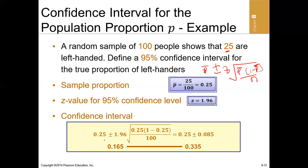Substituting into the formula: 0.25 plus or minus 1.96 times the square root of 0.25(1 minus 0.25) all over 100. This yields a margin of error of 0.085. The lower limit is 0.25 minus 0.085 = 0.165, and the upper limit is 0.25 plus 0.085 = 0.335. We are 95% confident that the population proportion of left-handers lies between 0.165 and 0.335.